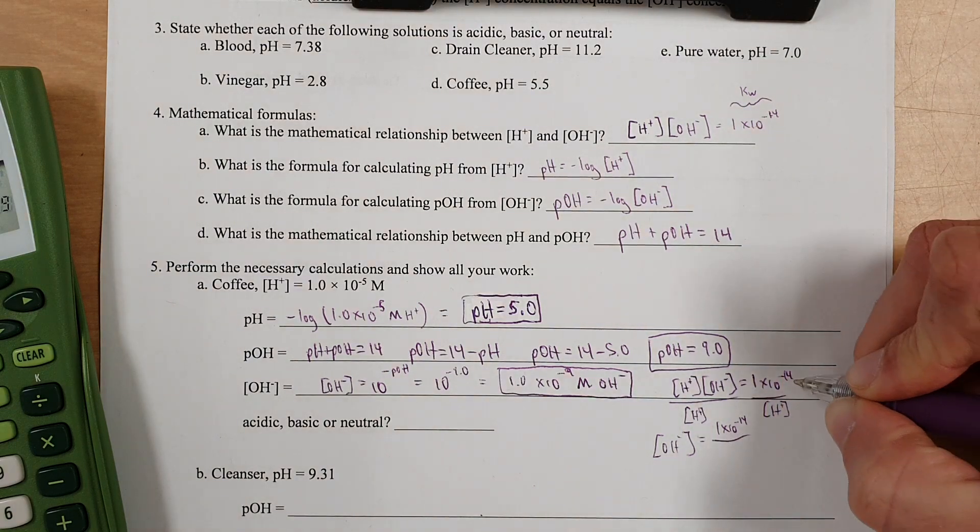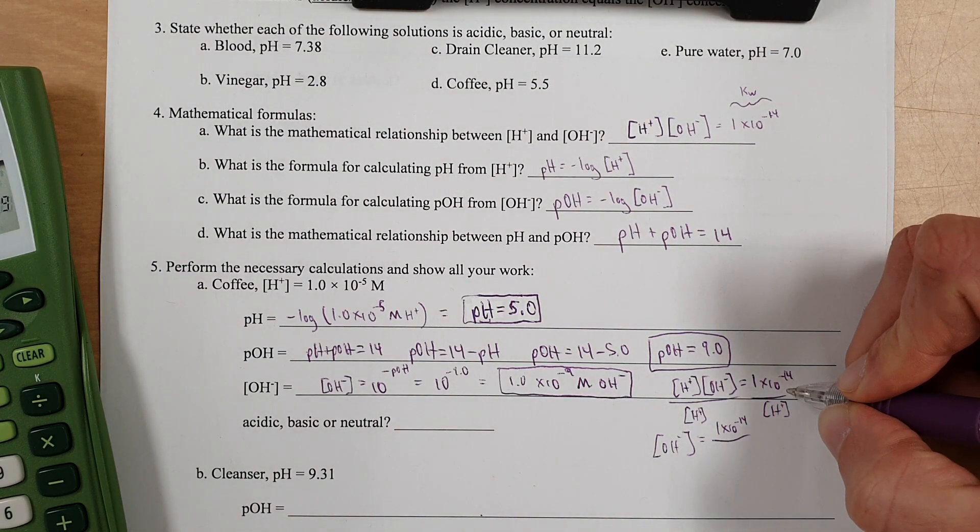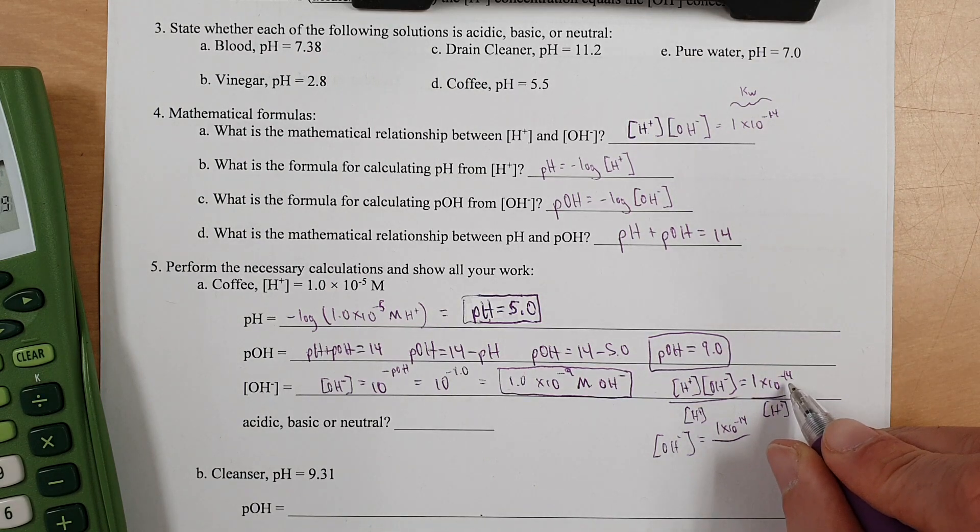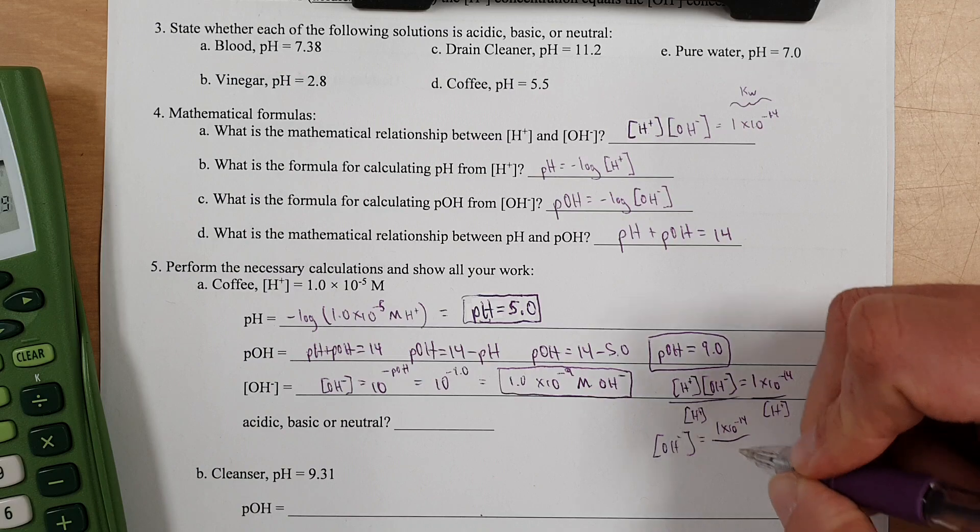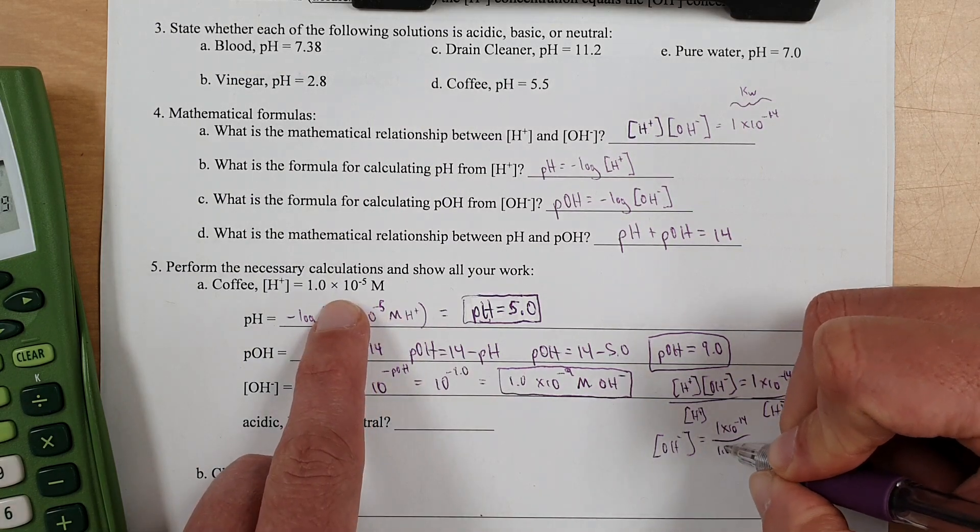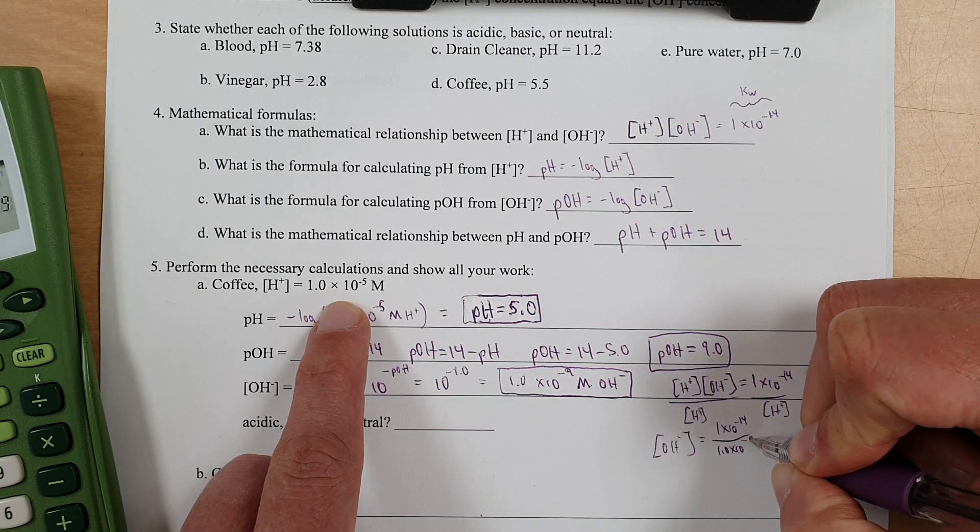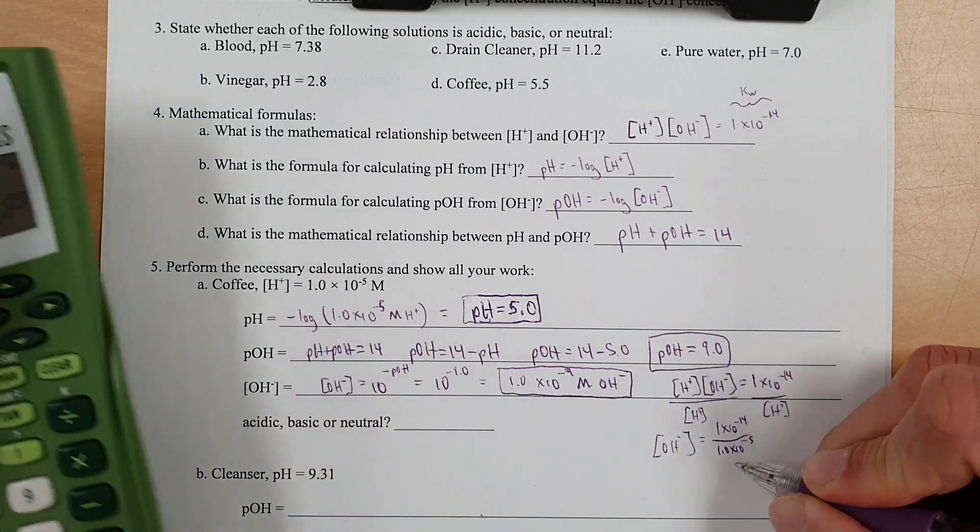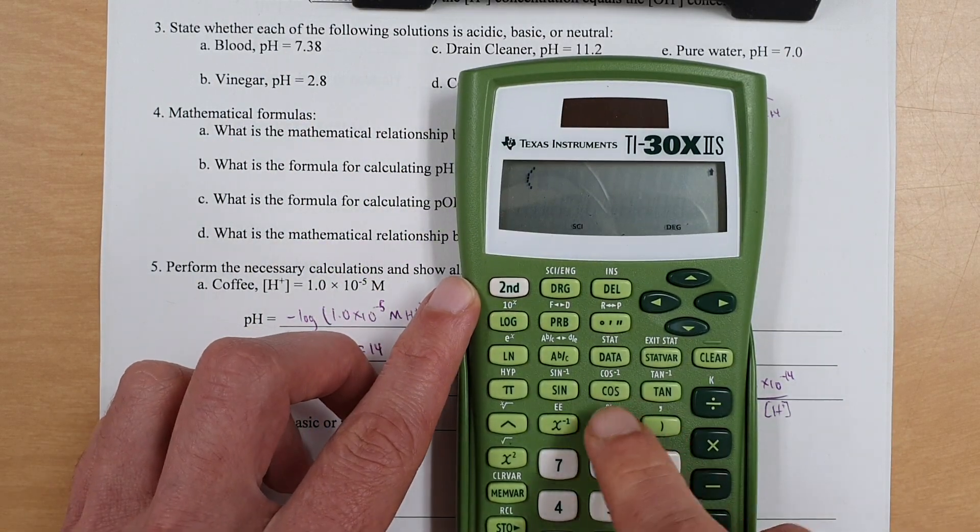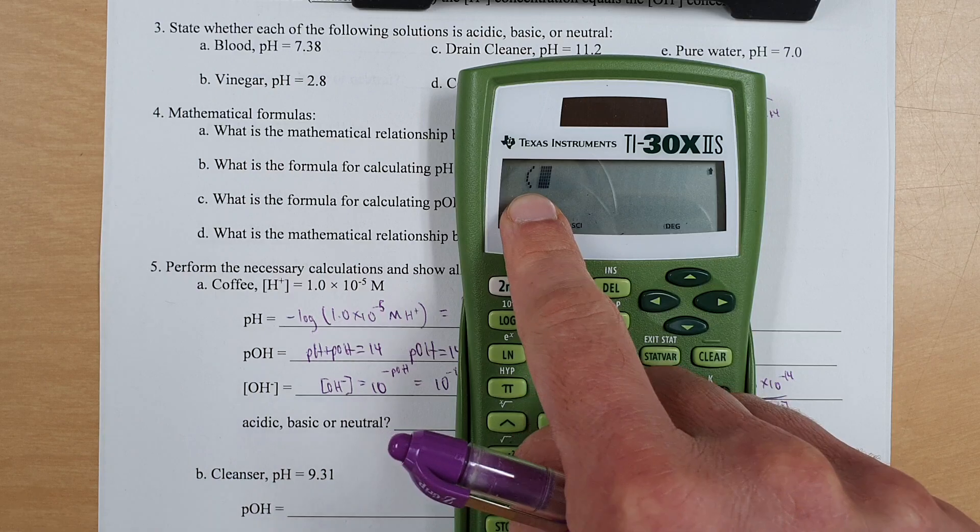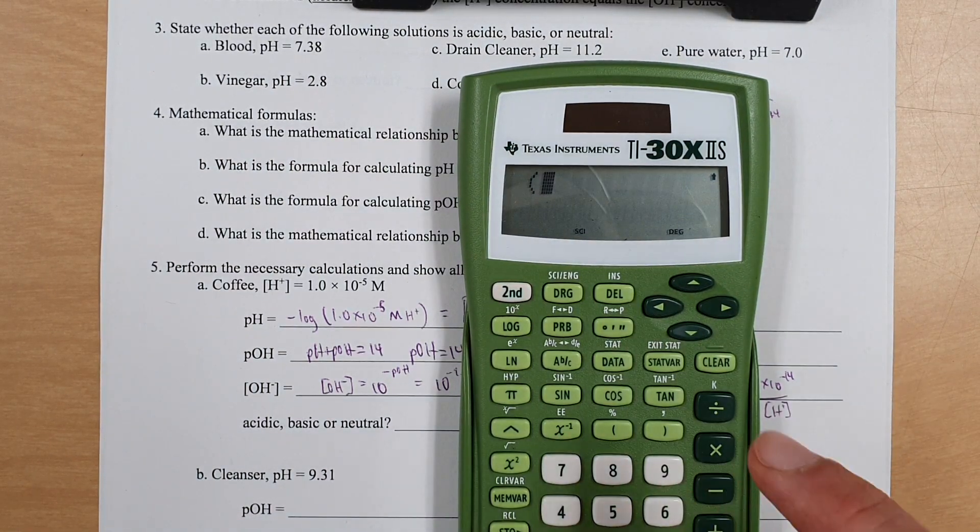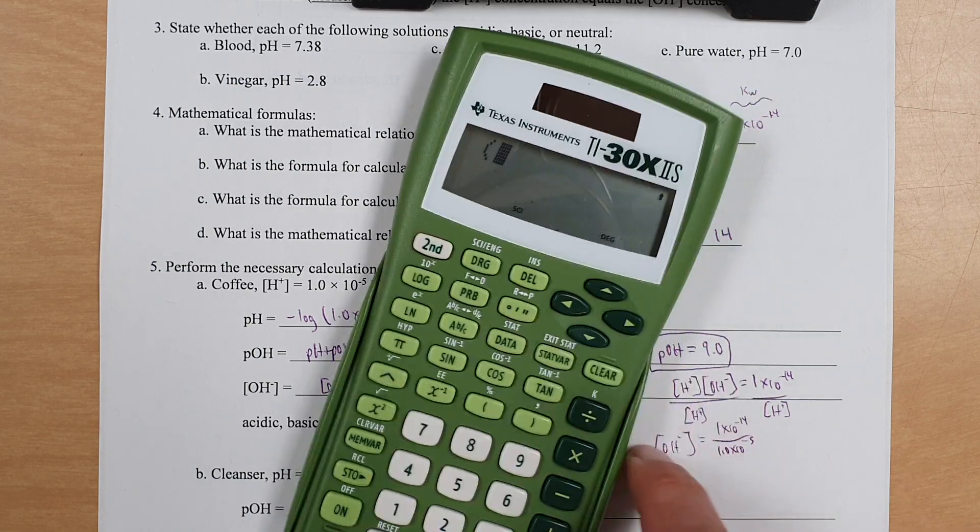Which means hydroxide ion concentration equals 1 times 10 to the negative 14th. This is a unitless quantity. Well, technically, it's mole squared per decimeter to the sixth, or molarity squared, but it's typically written without units. So anyway, this number divided by the hydrogen ion concentration, which is 1.0 times 10 to the negative fifth. But anyway, let's do this.